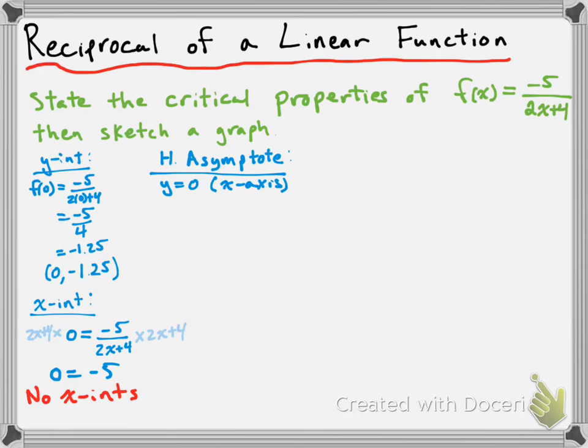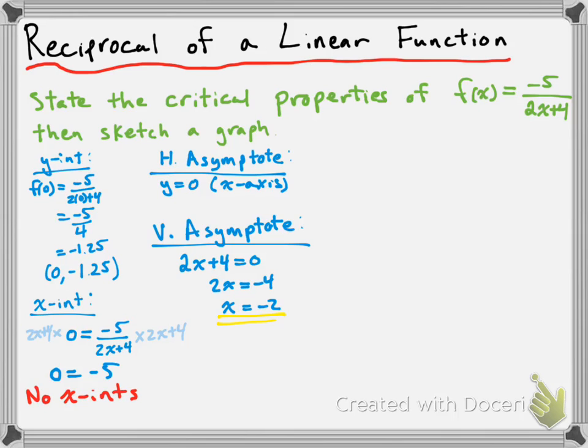The vertical asymptote is next. The vertical asymptote is located at the x-value that makes the denominator equal to 0 in our rational function. So we take our denominator, 2x + 4, set it equal to 0, and solve — we get x = -2. So our vertical asymptote occurs at x = -2.